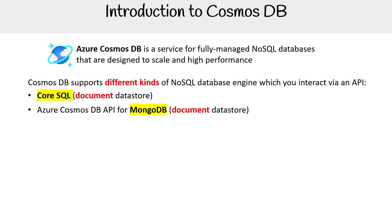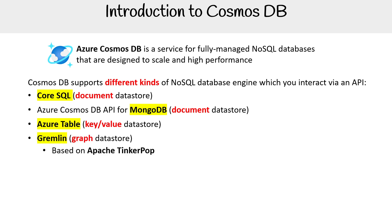Azure's Cosmos DB API for MongoDB, which is another kind of document data store. Azure Table, which is the old Cosmos DB that still sticks around, is a key-value data store. We also have Gremlin, which is a graph data store based on Apache TinkerPop — that's why we were covering it earlier in this course.